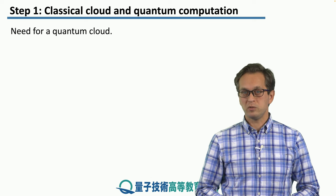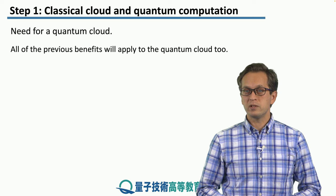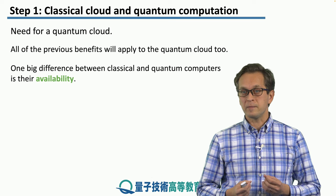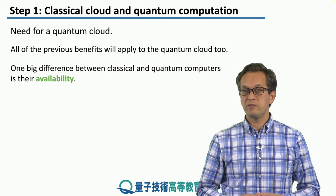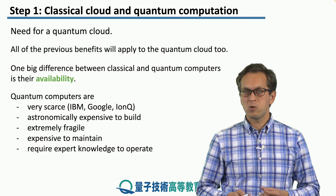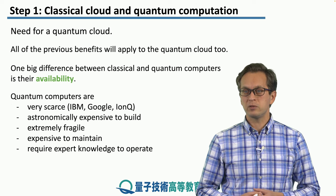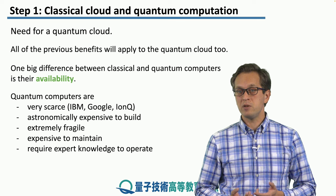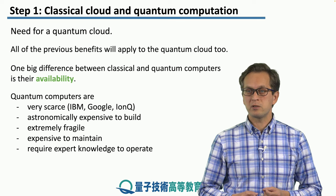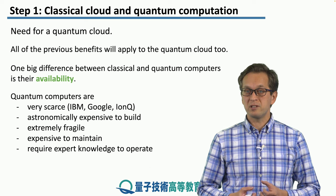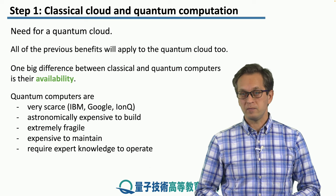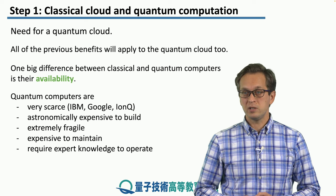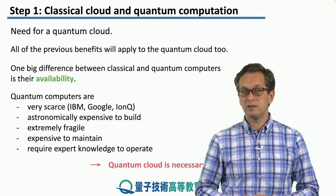So why do we need a quantum cloud? All of the previous benefits also apply to the quantum cloud. But one big difference is that classical and quantum computers are very different in terms of their availability. Quantum computers are very scarce. There's only a handful of large companies that run quantum computers, such as IBM, Google, and IonQ. They are astronomically expensive to build, extremely fragile, and very expensive to maintain. They also require expert knowledge to operate, and in order to take full use of these machines, we need a quantum cloud.